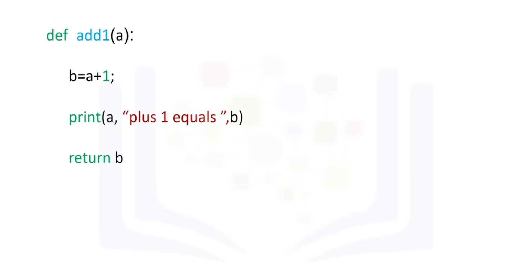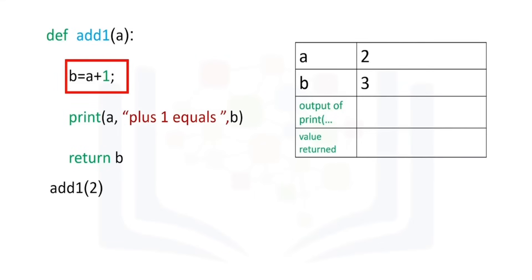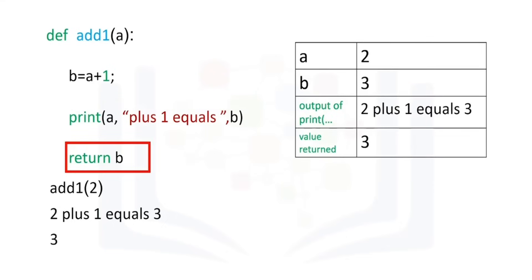Usually, functions perform more than one task. This function prints a statement then returns a value. Let's use a table to represent the different values as the function is called. We call the function with an input of 2. We find the value of b. The function prints the statement with the value of a and b. Finally, the function returns the value of b — in this case, 3.